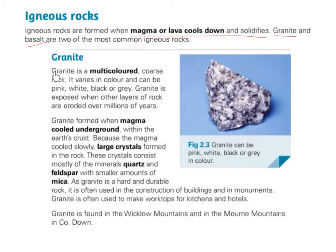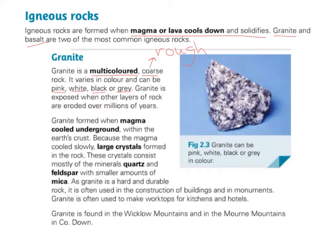Granite is a multicoloured, coarse — meaning rough — rock. It varies in colour and can be pink, white, black or grey. Granite is exposed when other layers of rock are eroded over millions of years. Granite formed when magma cooled underground within the earth's crust. Because the magma cooled slowly, large crystals formed in the rock.